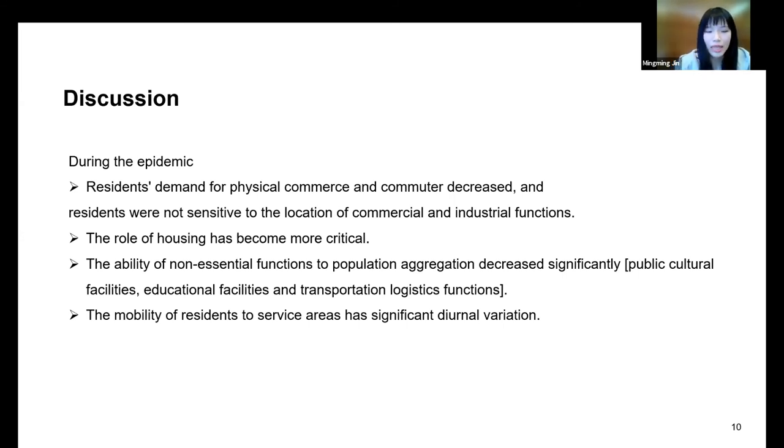The study found that the epidemic changes the impact of urban functions on population distribution. During the epidemic, epidemic prevention requirements such as shutting down work and school meant education and business activities were replaced by remote work, online commerce, and e-commerce. Under epidemic control requirements, residents' mobility is reduced, and their daily activities often occur at the community or near the community.